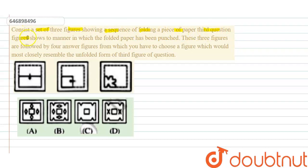The third question figure shows the manner in which the folded paper has been punched. These three figures are followed by four answer figures from which we have to choose a figure which would most closely resemble the unfolded form of the third figure of the question.